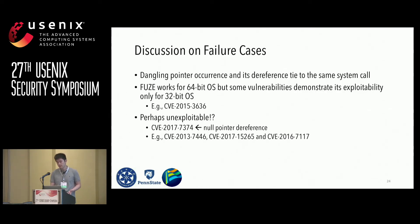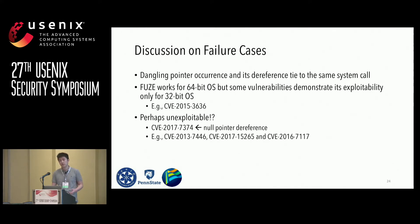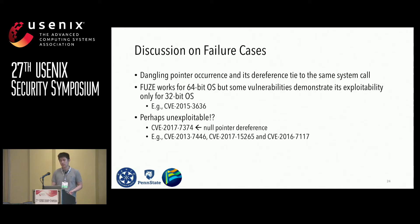For failure cases, the reasons vary. In some cases, the dangling pointer occurrence and dereference sites are in the same system call, leaving no time window to perform heap spray. In other cases, we found a dominator that panics the kernel before reaching any exploitable primitive — for example, CVE-2015-3636 and CVE-2017-7374 both dereference an invalid address before reaching an exploitable primitive. For the remaining cases where we were not able to generate exploits, if you are able to develop a working exploit for these vulnerabilities, please let me know.